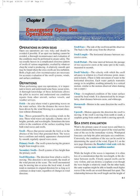Chop is a roughened condition of the water surface caused by local winds, characterized by its irregularity, short distance between crests, and whitecaps. Downswell is motion in the same direction the swell is moving. Upswell is motion opposite the direction the swell is moving. For example, if the swell is moving from north to south, a seaplane going from south to north is moving upswell.